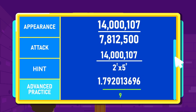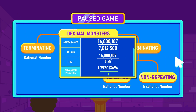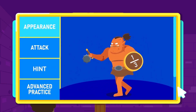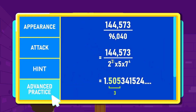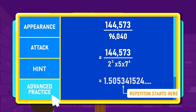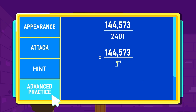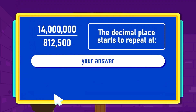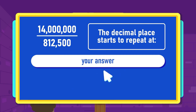The result is 1.792013696. In the case of a non-terminating repeating decimal, the highest power of either 2 or 5 shows when the numbers after the decimal place start to repeat, instead of yielding 0 as in terminating decimals. If the denominator's prime factors contain other numbers besides 2 or 5, this concept won't be applicable.